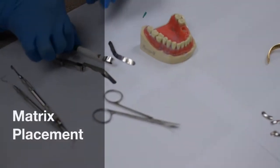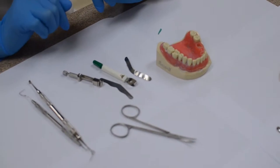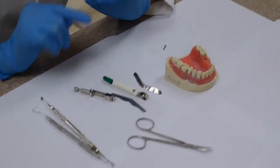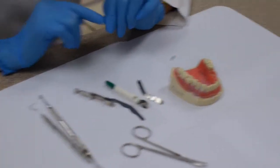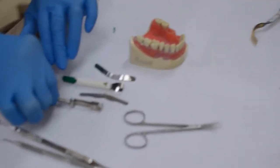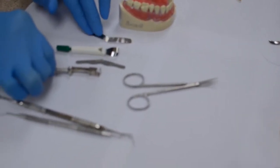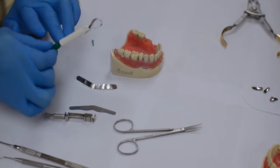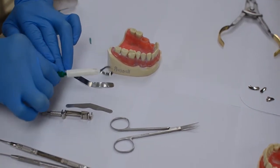Today we're going to talk about assembling a matrix and retainer if we're going to do an amalgam or a composite restoration. First we're going to talk about the Toffelmeyer retainer and circumferential stainless steel band as opposed to a pre-loaded universal matrix band and retainer.